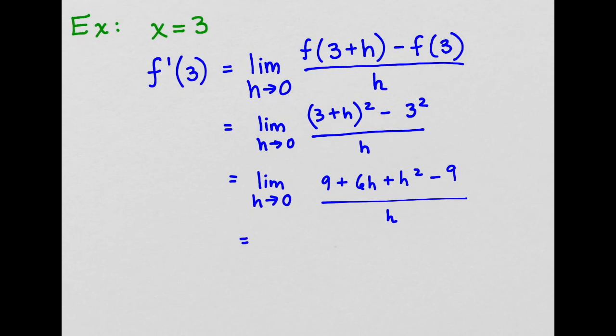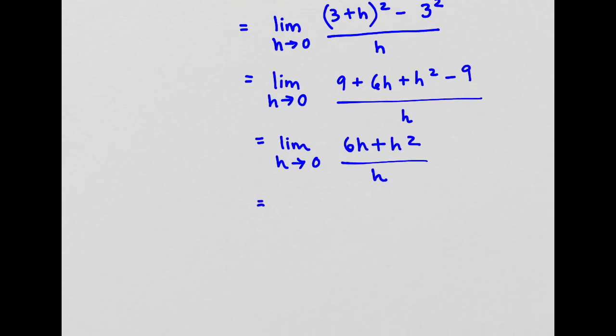Now let's cancel out terms. The 9 cancels out, leaving us with f prime of 3 equals the limit as h approaches 0 of 6h plus h squared over h.